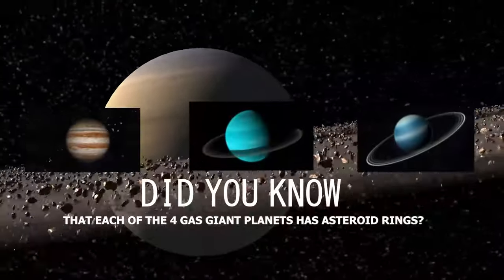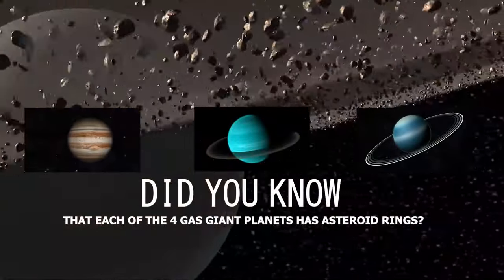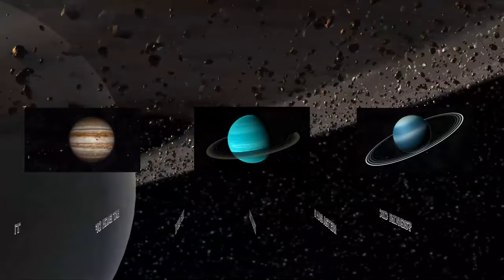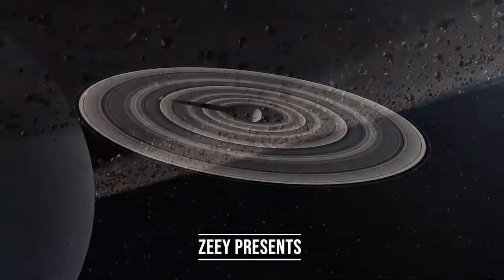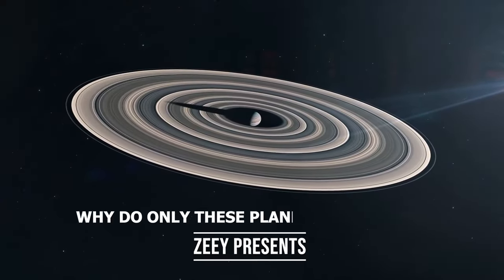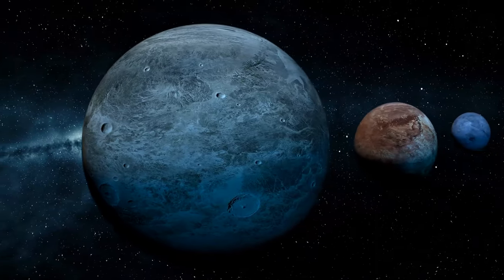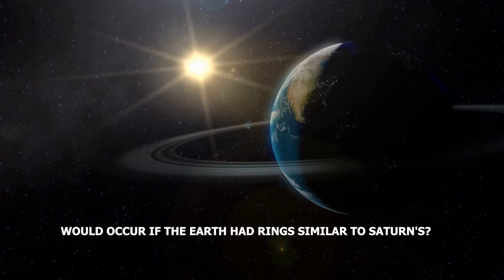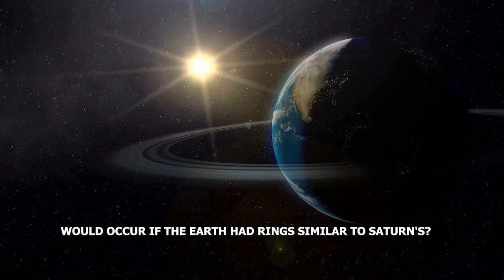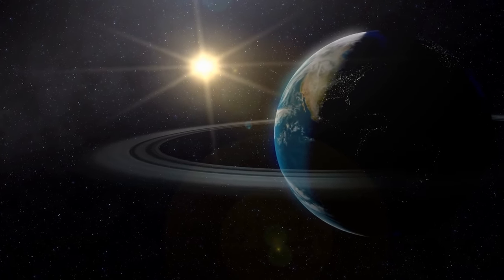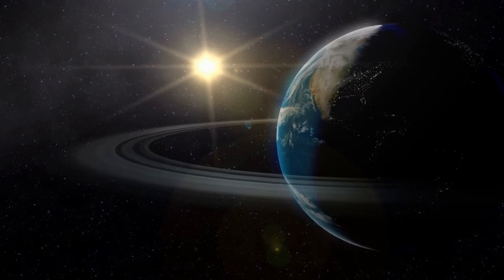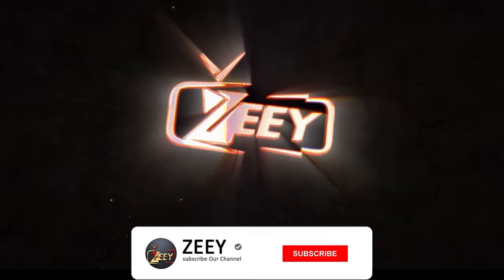Did you know that each of the four gas giant planets has asteroid rings? Yes, the four gas giants have rings, with Saturn's being the most vibrant. But why do only these planets have rings? Why do rocky planets not possess them? What would occur if the Earth had rings similar to Saturn's? Let's investigate.